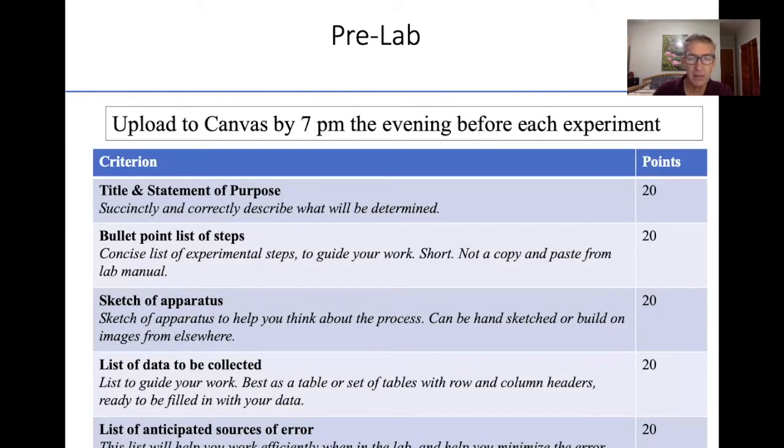This is the rubric for the pre-lab. The pre-lab should be uploaded to Canvas by 7pm the evening before each experiment, and the due time will be on Canvas. There should be a title and statement of purpose, a bullet point list of steps, a sketch of the apparatus, and a list of the data to be collected. I also ask you to list any sources of error that you anticipate. The heart of this is the bullet point list of steps, your notes to yourself. I do not want a copy and paste from the lab manual.